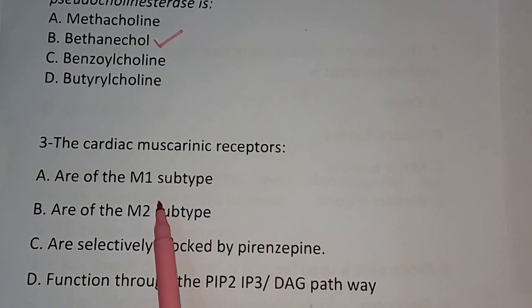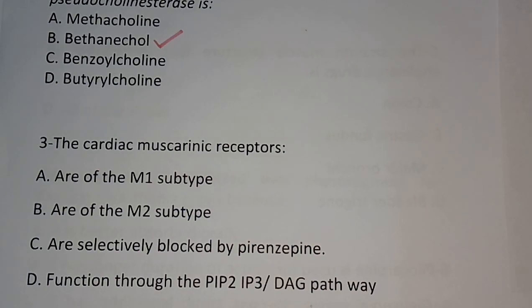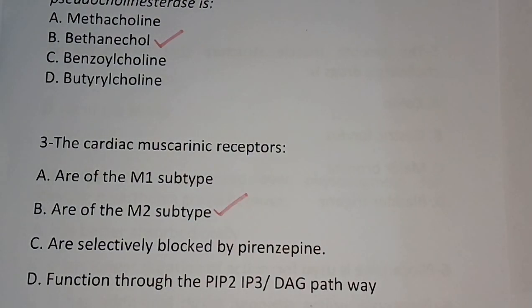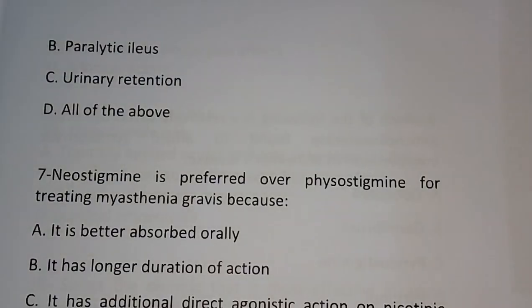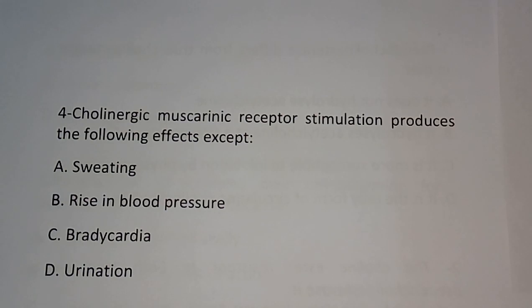Question number three: The cardiac muscarinic receptors — (A) they are M1 subtype, (B) they are M2 subtype, (C) they are selectively blocked by pirenzepine, (D) function through the PIP2/IP3-DAG pathway. The correct answer is option B — they are of M2 subtype.